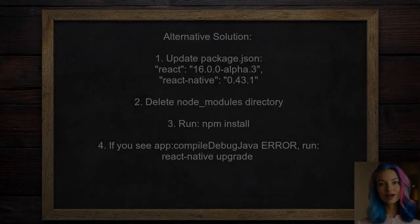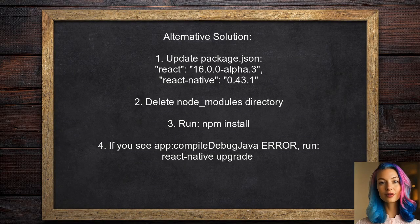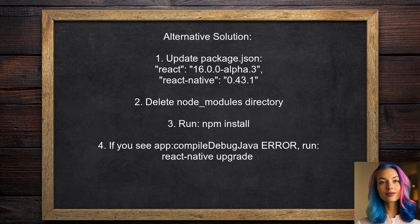An alternative solution from another user suggests a few steps to resolve the issue. First, open your package.json file and update the React version to 16.0.0-alpha3 and React Native to 0.43.1. Next, delete the node_modules directory. Then reinstall your npm packages using the command npm install. If you encounter an app compile debug Java error, run React Native upgrade.